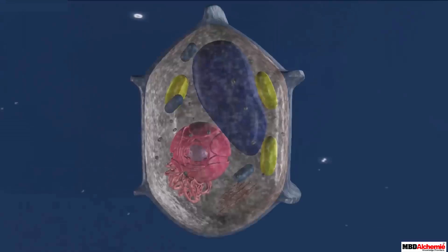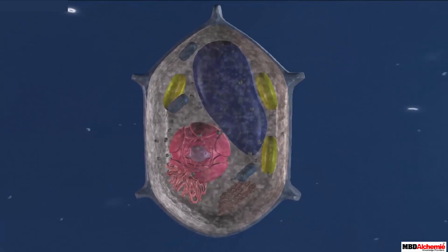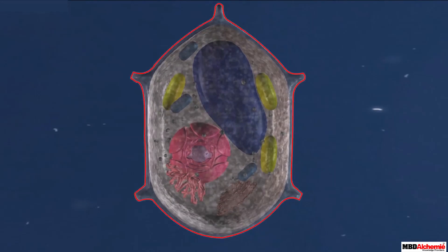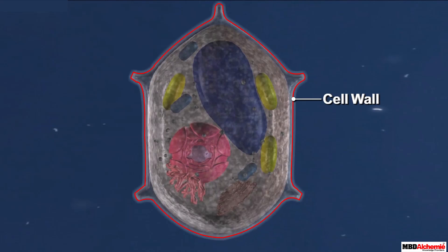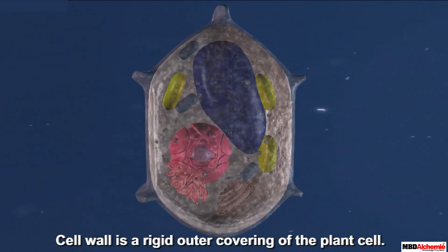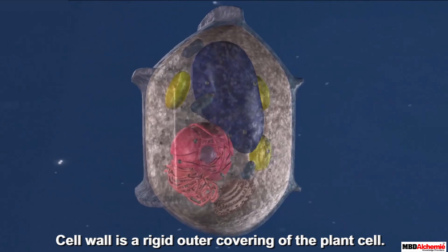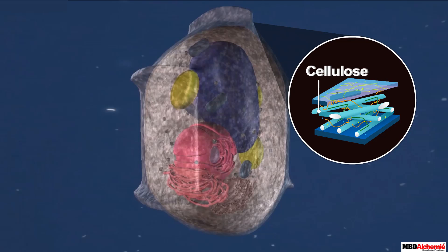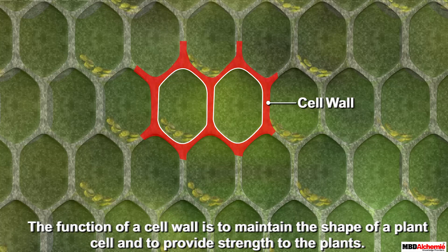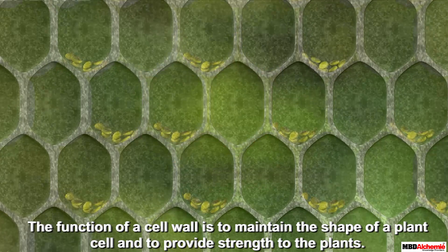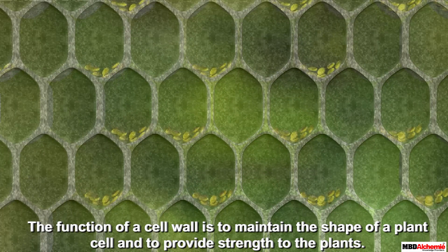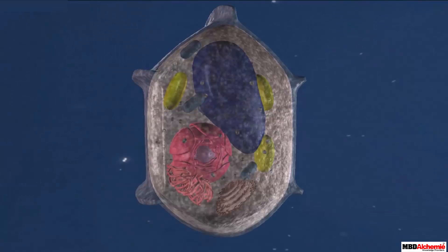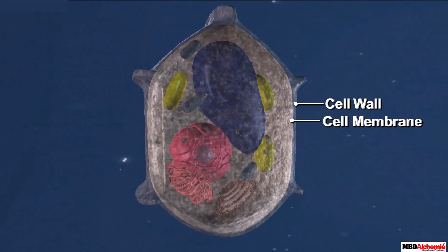The cell membrane is the protective layer present in all cells. In the case of a plant cell, an additional protecting layer is present outside the cell membrane — this is the cell wall. A cell wall is the rigid outer covering of the plant cell, made of cellulose, which is a complex molecule. The function of a cell wall is to maintain the shape of a plant cell and to provide strength to the plant.